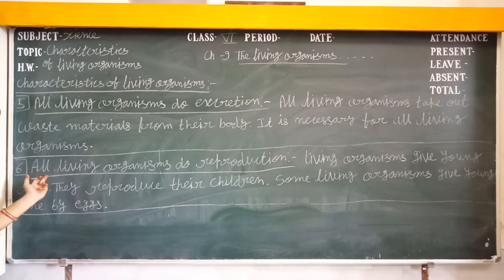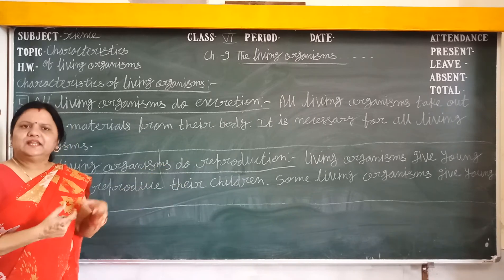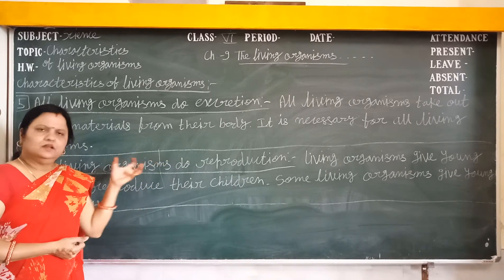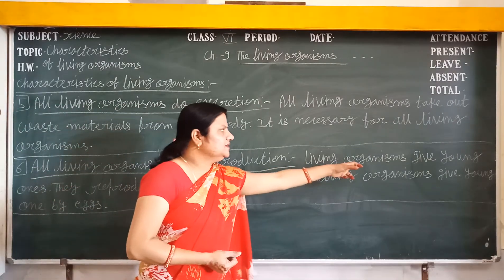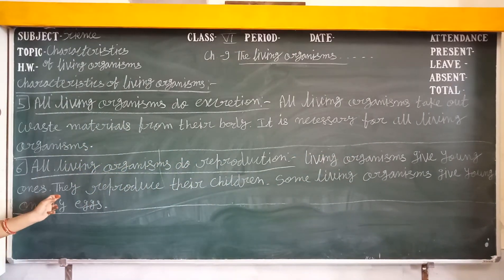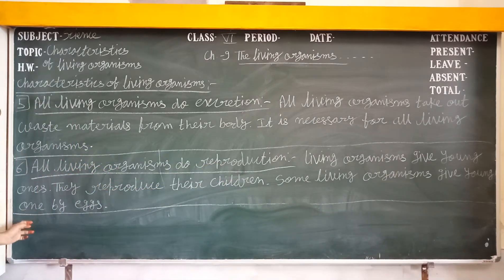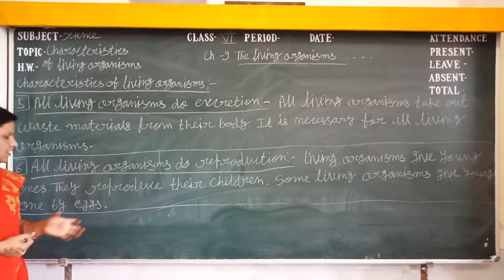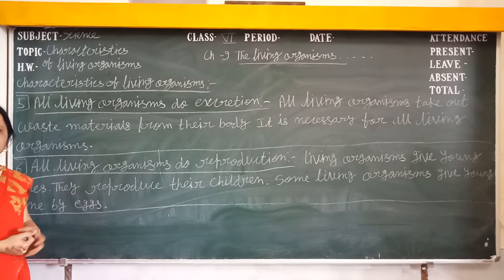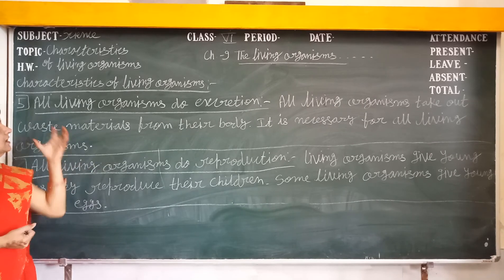Next, all living organisms do reproduction. Reproduction means they produce their own offspring. All living organisms reproduce and give young ones. Some reproduce by laying eggs — these are called oviparous — while others give birth directly to babies, called viviparous. All these characteristics are present in living organisms.